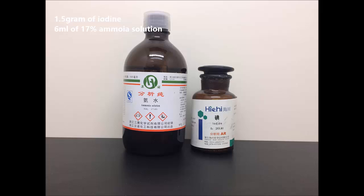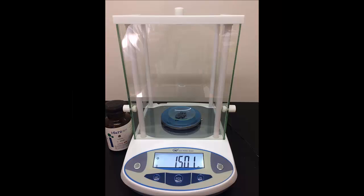To start things off, we are going to need two chemicals. Here I'm using 17% aqueous ammonia solution and the elemental form of iodine. First, I weigh out about 1.5 grams of iodine.